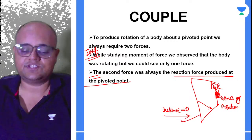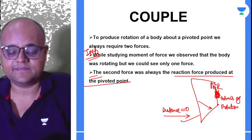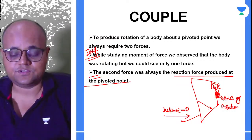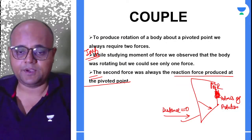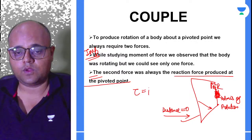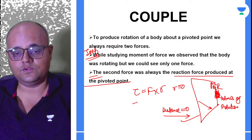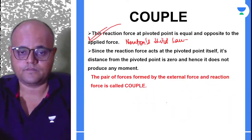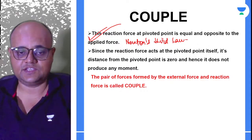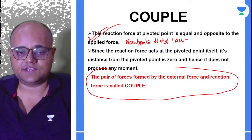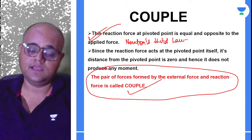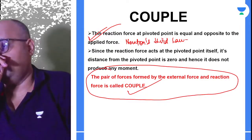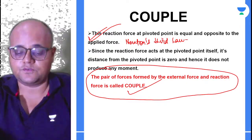Since the reaction force acts at the axis of rotation, the distance R is zero, so its torque = F × 0 = 0. The pair of forces formed by the external force and the reaction force is called a couple. It is necessary to have two forces — you cannot imagine a couple with a single force.